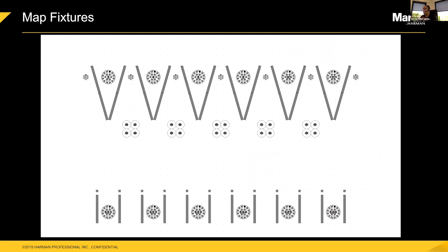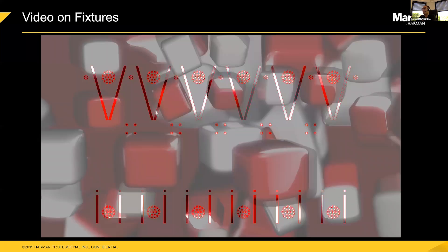One of the first steps on the P3 is mapping fixtures. On the P3, you can mix and match fixtures any way you want. You just map them as they're laid out on the stage — you can angle fixtures, group them, scale them smaller or bigger. Once you've made your mapping and get a video input from the media server, video is then mapped onto those fixtures. The P3 itself takes care of all the rotation and scaling. Even if you mix products with different resolutions and pixel pitches, the P3 makes sure every fixture gets the right segment of the video image only on its LEDs.